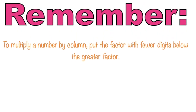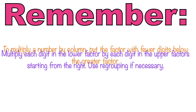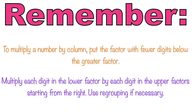So always remember, children, to multiply a number by column: put the factor with fewer digits below the greater factor. And lastly, multiply each digit in the lower factor by each digit in the upper factor, starting from the right. Use regrouping if necessary.